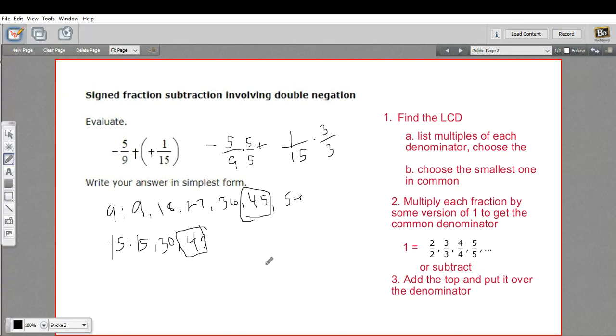So let me rewrite this down here. This is a negative, and then on the top, 5 times 5 is 25. On the bottom, 9 times 5 is 45. And then we have a plus sign. And on the top, 1 times 3 is 3. And on the bottom, 15 times 3 is 45.